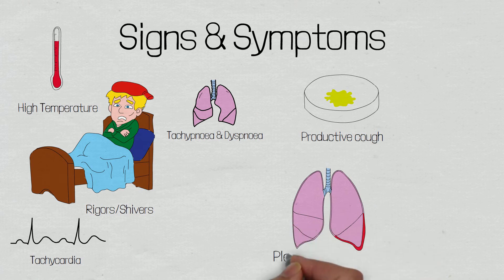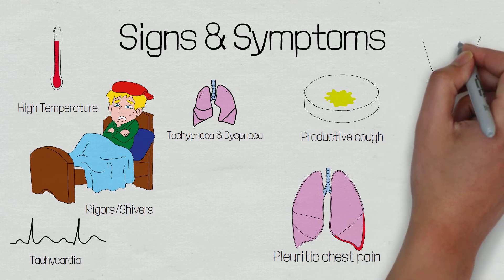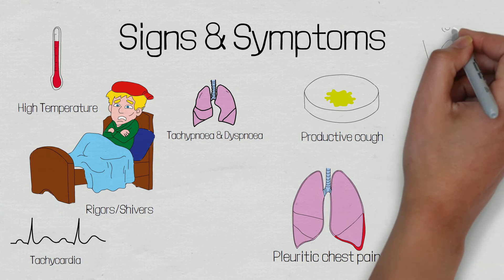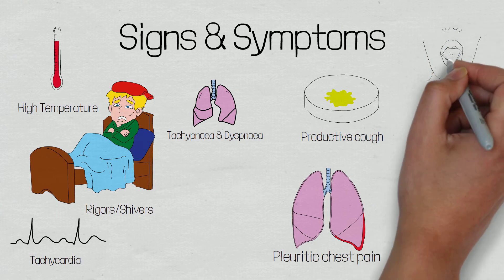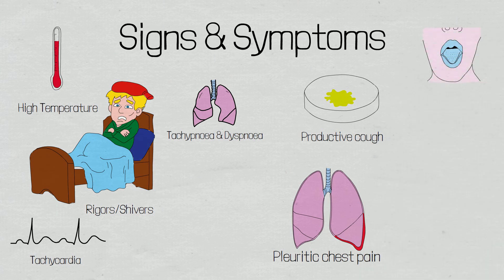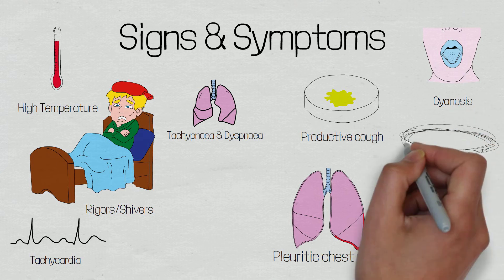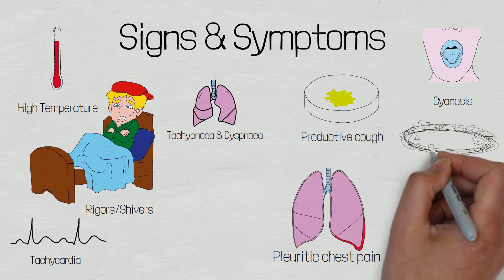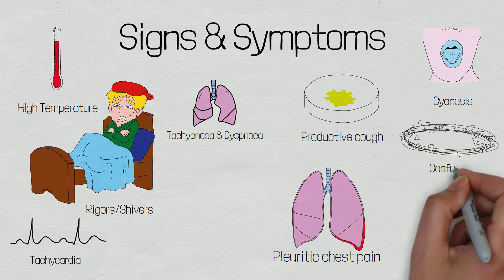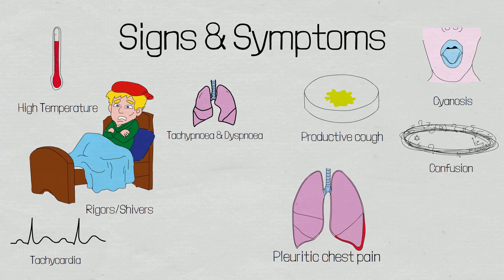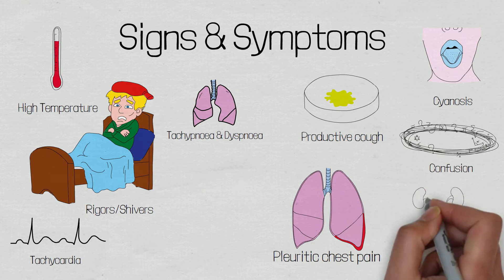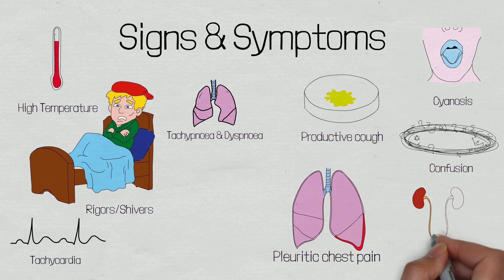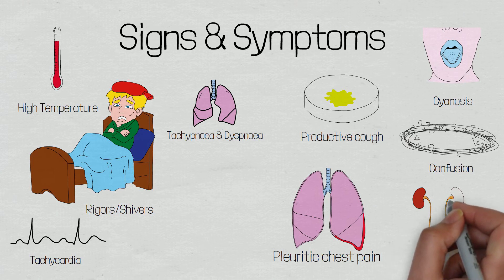More sinister signs and symptoms that may indicate a deteriorating patient include cyanosis, which is a blue discolouration which can be seen centrally, such as the lips or the tongue, or peripherally, such as the fingers. This is caused by a lack of oxygen bound to red blood cells. Patients may present with confusion, which may be due to the high temperature, hypoxia, dehydration, bacteremia, or poor perfusion, caused by systemic vasodilation causing hypotension. This may also lead to a reduced urine output, as the body tries to compensate for the hypotension and retain more water, or if the kidneys are not adequately being perfused.